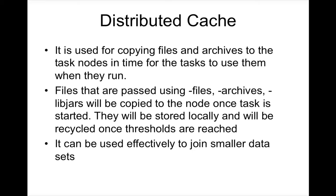It can be used effectively to join smaller datasets. Not only for joins — if you think about conventional data warehousing, lookups are quite common. So it can be used for lookups: you can cache the data that needs to be looked up before taking a subsequent action, and that data can be distributed as a distributed cache. One of the key use cases where distributed cache is handy is map-side joins, which is analogous to lookups from a conventional data warehousing perspective.